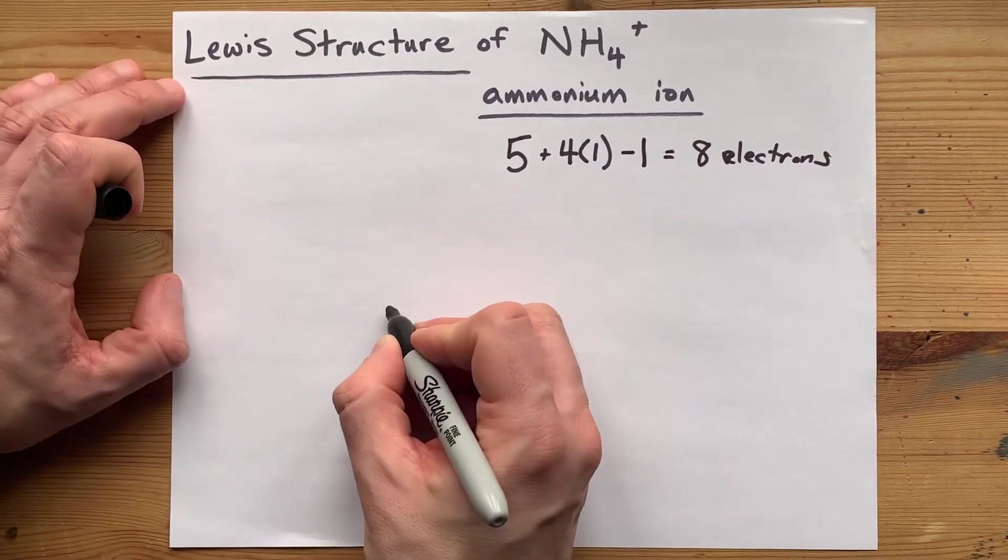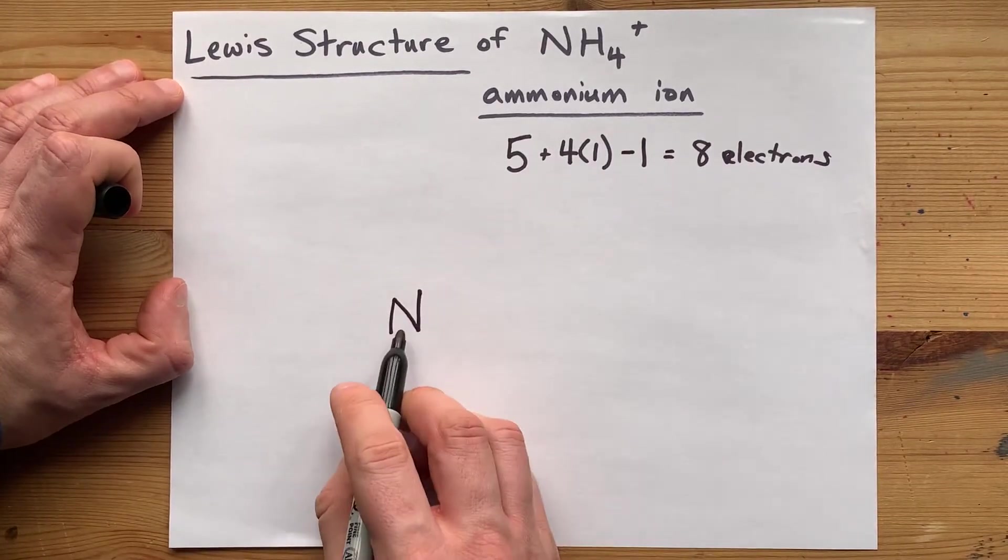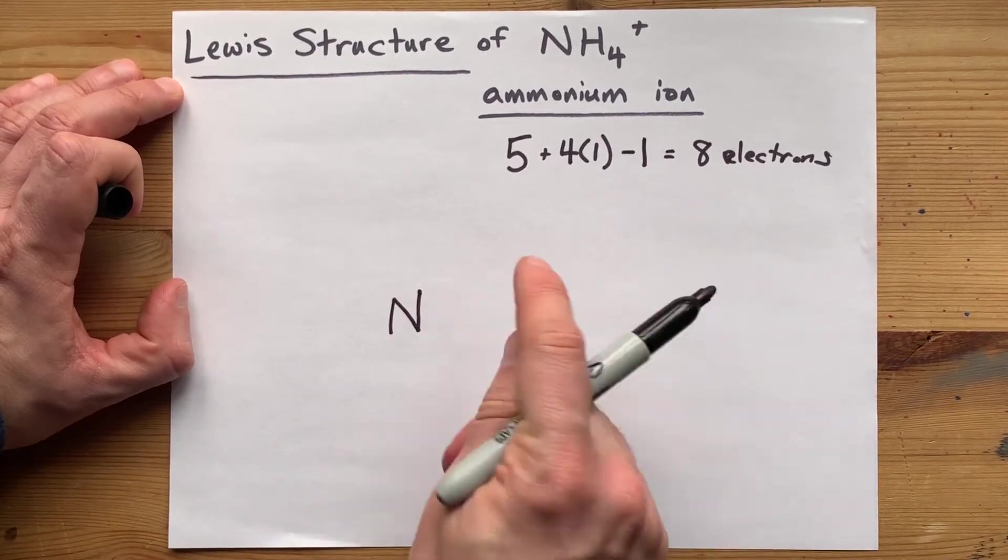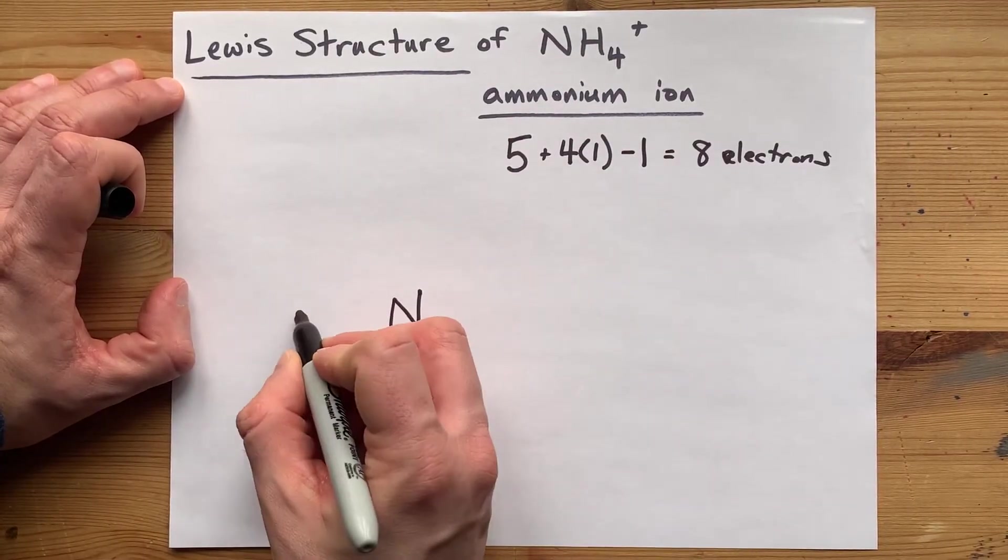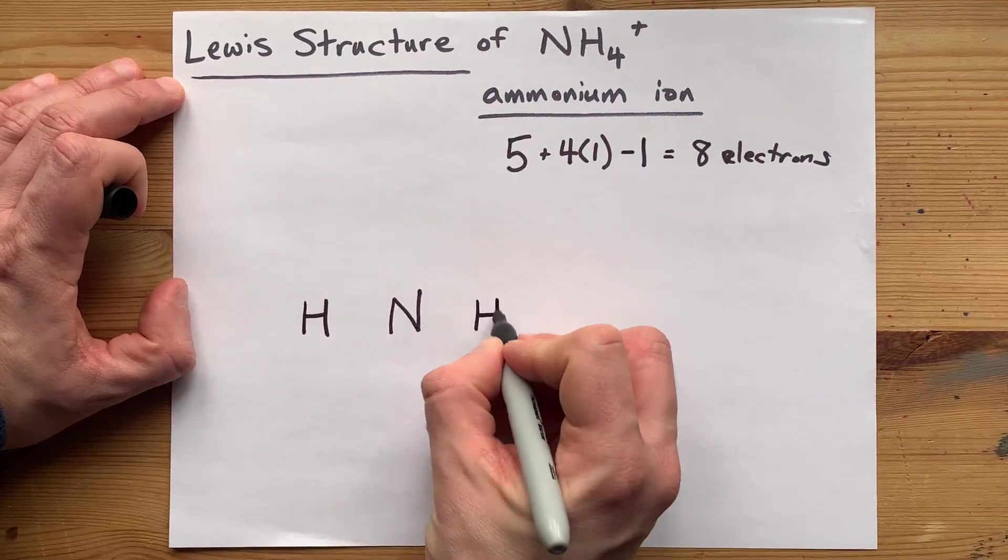Now to do it, we're going to put the nitrogen in the center. Nitrogen can handle many bonds, and hydrogen cannot. So I'm going to put the nitrogen in the center and surround it with four H's.